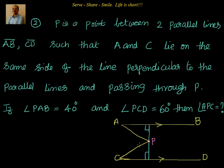This is a straightforward ninth-class problem. We have been given angle PAB equal to 40 degrees and angle PCD equal to 60 degrees. Now, what is the better way to solve this? You can actually go with each triangle, find out the remaining angle, then apply the linear pair — a straight line angle is 180 degrees — and find out the x value.